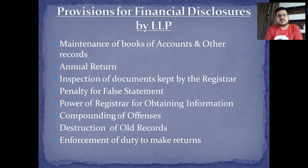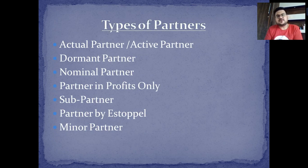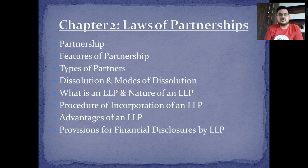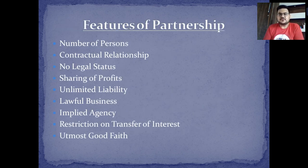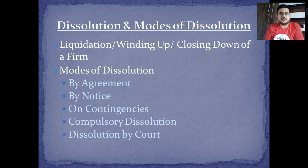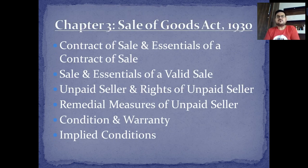So we are done with partnership firm and limited liability partnership. We discussed what is partnership, its features, types of partners, dissolution and modes of dissolution, what is LLP, nature of an LLP, procedure of incorporation, advantages, and provisions for financial disclosures. We now move to the next topic — Chapter 3, the Sale of Goods Act 1930, which is based on the Contract Act 1872.